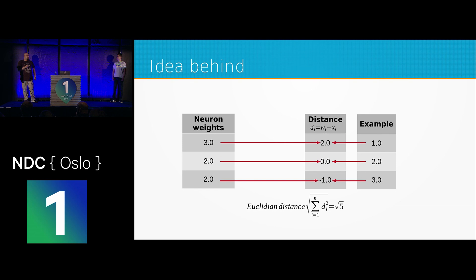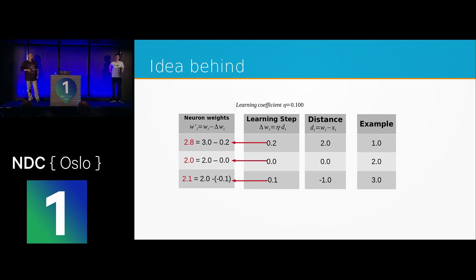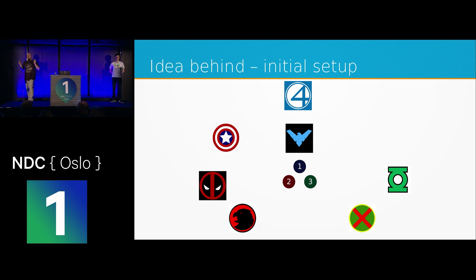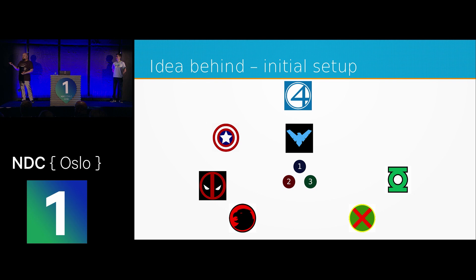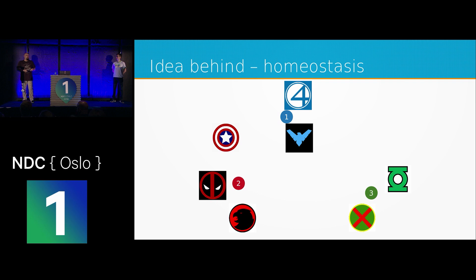The idea: we have a neuron with its weights and an example. We calculate partial distances between each value and use them to compute the Euclidean distance between the neuron and the example — though you can use any distance metric, like taxi cab distance. We use the simple Euclidean distance. This unsupervised learning is quite dynamic: neurons move around the solution space until they find their niche — their homeostasis. They don't stop moving entirely; they just move so little it no longer matters.